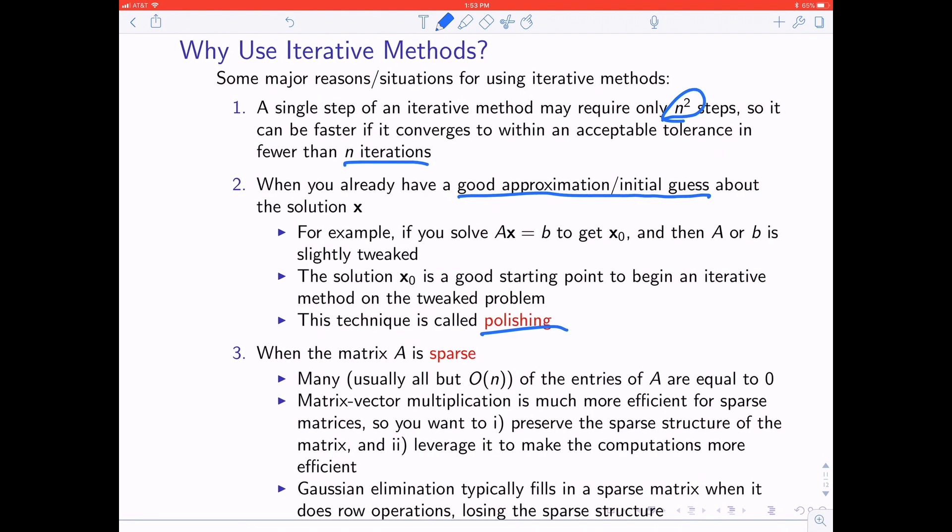And then finally, when the matrix A is sparse, which means that all but order n of the entries are equal to zero, you can even get this to be faster than n squared steps per iteration. So it gets even faster. Whereas something like Gaussian elimination typically fills in a sparse matrix when it does row operations, and you lose that nice sparse structure, and it's just this wasted efficiency.